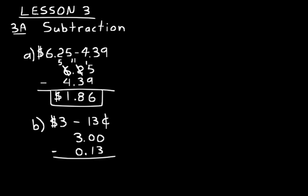Now subtract these. We have $3.00 minus $0.13. We need to subtract 3 from 0 — we can't do that, so we need to borrow from the next column. But that's a 0 as well, so we borrow from the 3, making it a 2, put a 1 here so we have a 10. Borrow 1 from that, making this a 9 and a 10 in the hundredths column. 10 minus 3 is 7. 9 minus 1 is 8. 2 minus 0 is 2. That gives us $2.87.